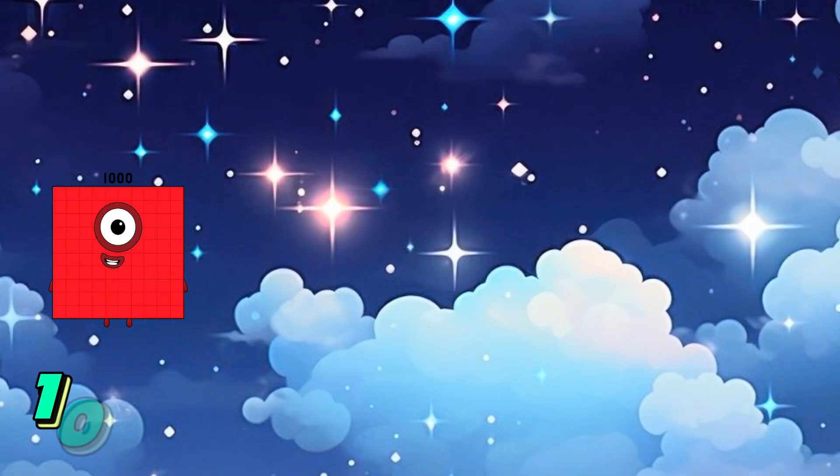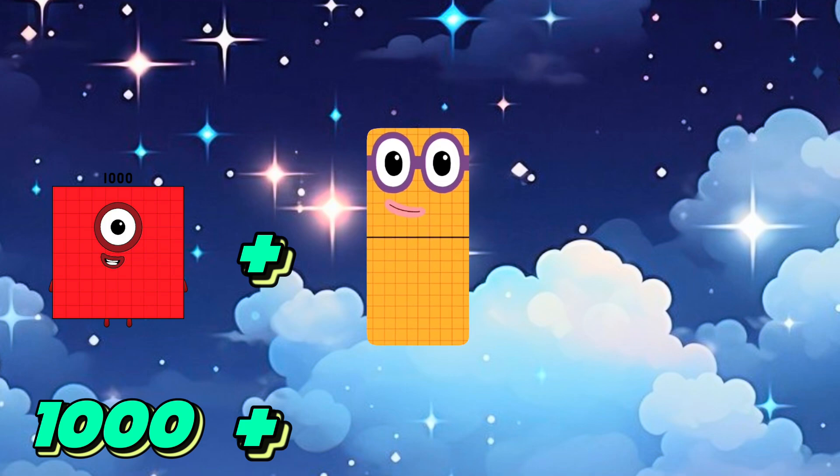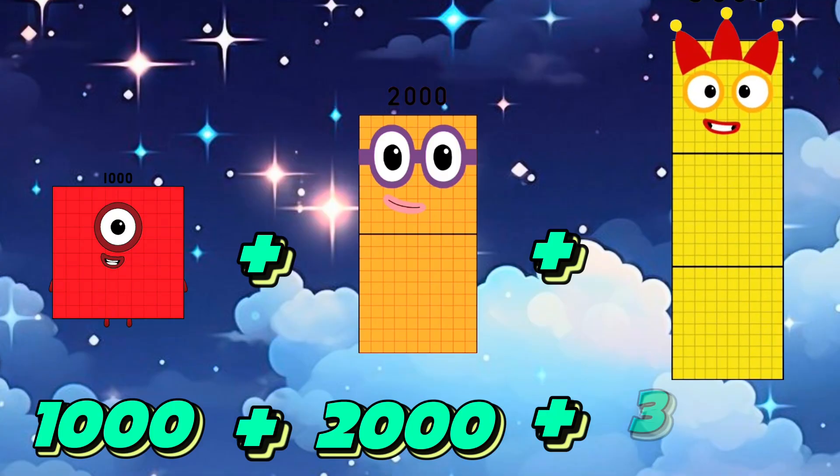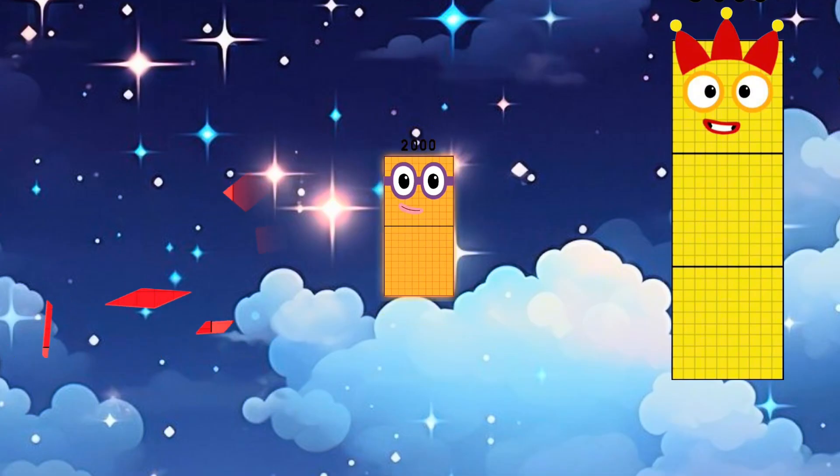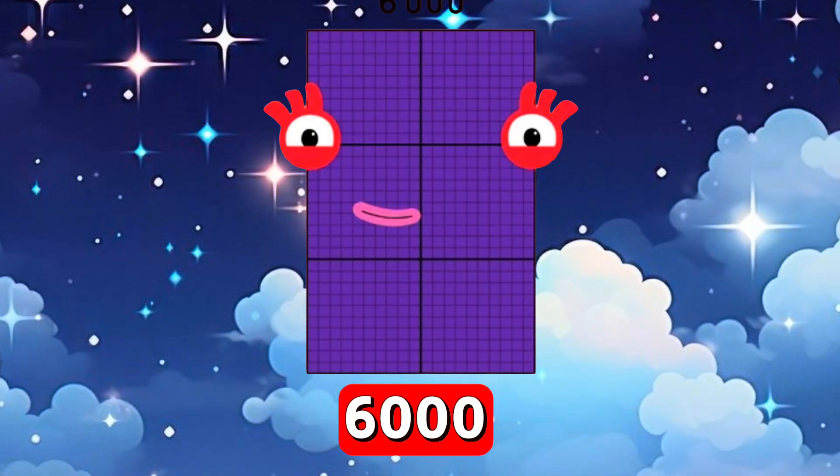Next, 1,000 plus 2,000 plus 3,000 equals 6,000.